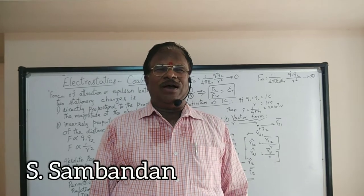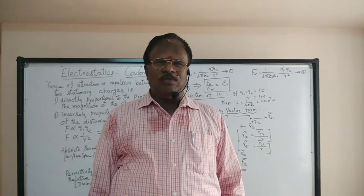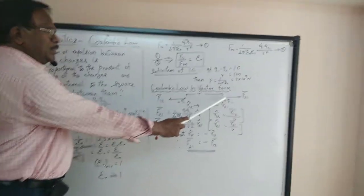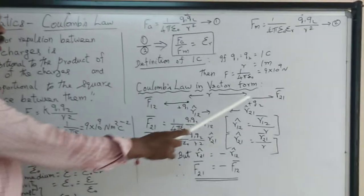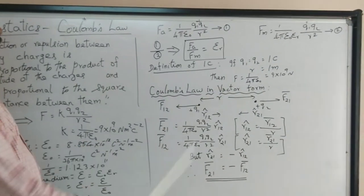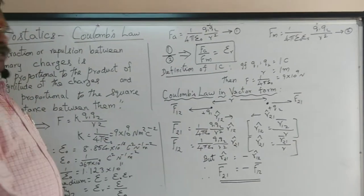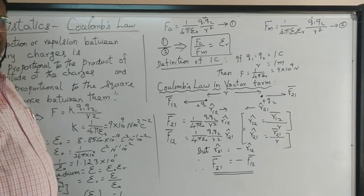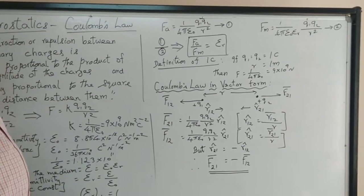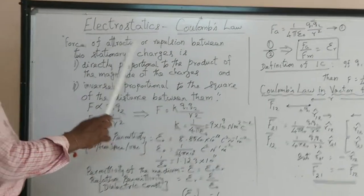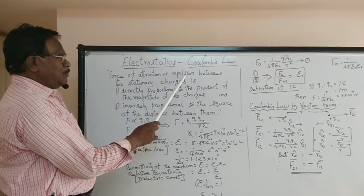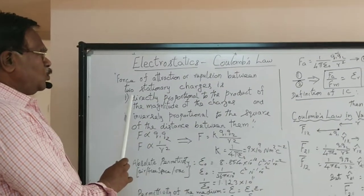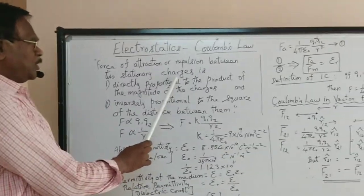In continuation of our topic in Electrostatics, today we are going to deal with Coulomb's law and also its vector form. Consider two charges q1 and q2 separated by a distance. They are two point charges with a force of attraction or repulsion. According to the diagram, both are positive, so it is repulsive because like charges repel. The force of attraction or repulsion between two stationary charges — remember the charges must be stationary.